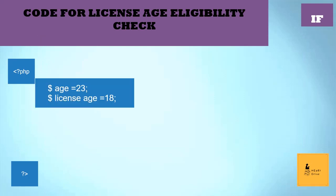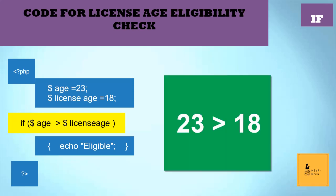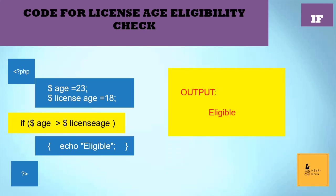First, we'll declare the age and license age variables. I'm declaring the age variable as 23 and the license variable as 18. Then we'll give the condition. Inside the condition, I'm writing age greater than license age. And in the statement, I'm giving the word eligible. My program will read the age value and compare it with license age. As the age value given is greater than license age, the output will be printed as eligible.